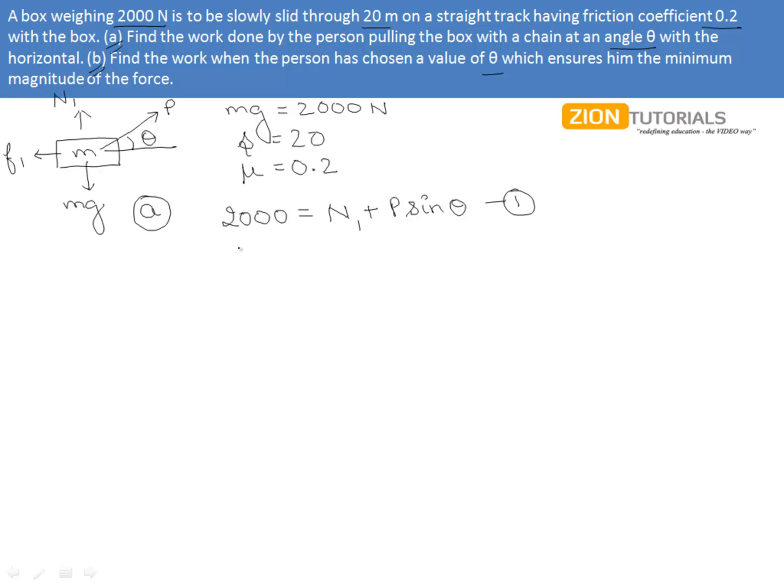let us frame an equation in horizontal direction which is simply P cosθ equals to 0.2 N. That is the frictional force. Marking it as equation number two.